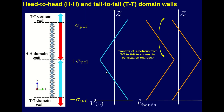In extreme scenarios where the polarization points in the same direction as the normal vector to the domain wall, this gives head-to-head domain walls with a positive polarization charge and tail-to-tail domain walls with a negative polarization charge. The electric fields produced will bend the electronic bands, as visible here.